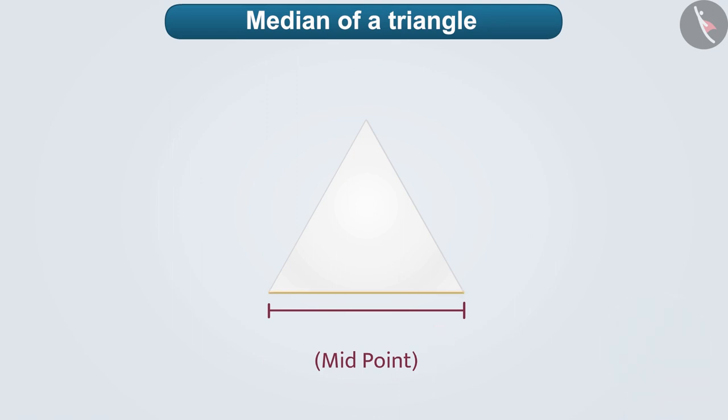To find the midpoint of this side of a triangle, we fold the paper in such a way that the two vertices of this side cover each other. We will draw the crease. The point where the crease intersects this side of the triangle is the midpoint of this side.